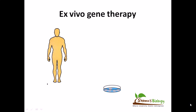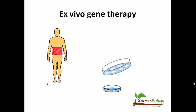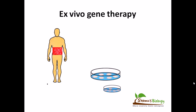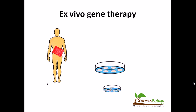For example, this individual is having a faulty gene — suppose inside his stomach. So we take out the tissue from the stomach lining and we start to culture them in a culture plate.